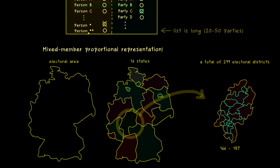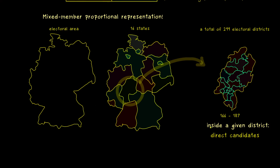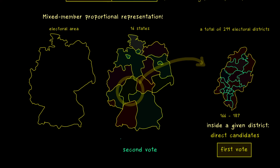The reason each district has its own ballot paper is exactly the first vote, because inside such a district different persons compete against each other on the first vote. This means inside a given district we have direct candidates, and after all the first votes are counted we have one winner for each district. These electoral districts are only important for the first vote, because the second vote on the other hand exclusively happens on the state level.